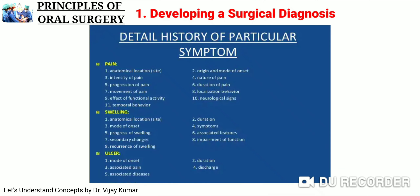For detailed history of pain, we assess location, origin, mode of onset, intensity, nature, progression, duration, movement, localization behavior, neurological signs, and temporal behavior. For swelling, we assess location, duration, mode of onset, symptoms, progress, associated features, secondary changes, impairment of function, and recurrence. For ulcers, we assess mode of onset, duration, associated pain, discharge, and any associated disease.